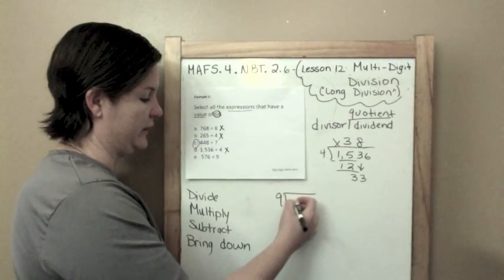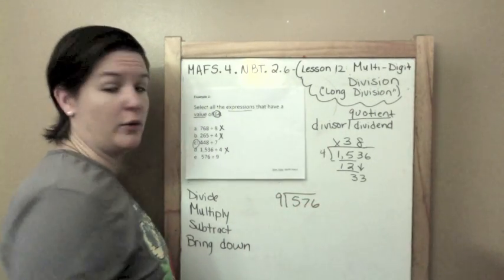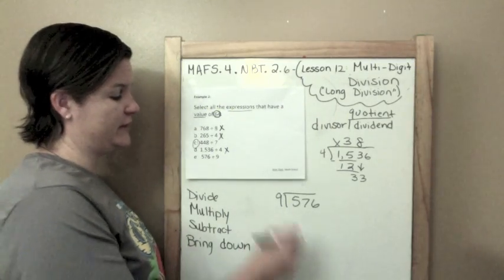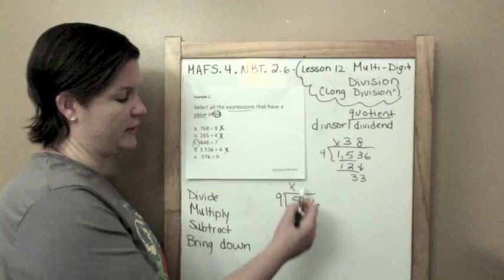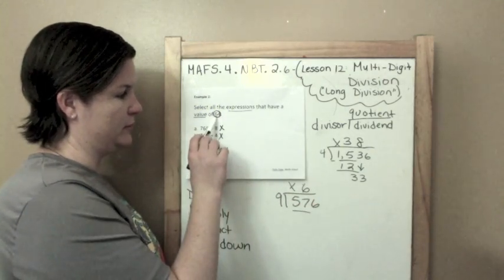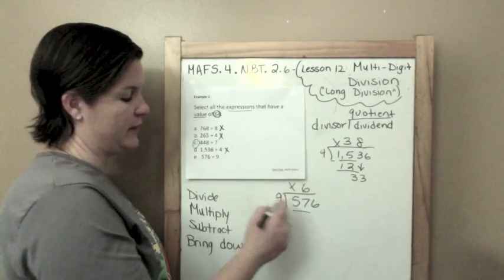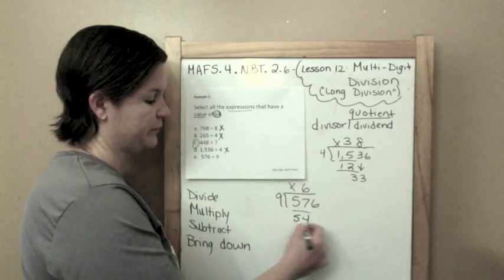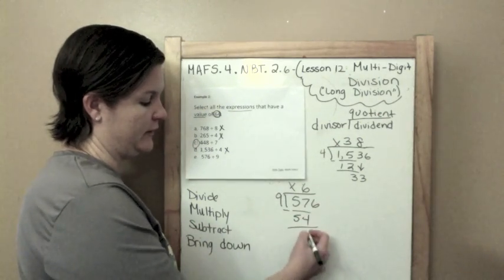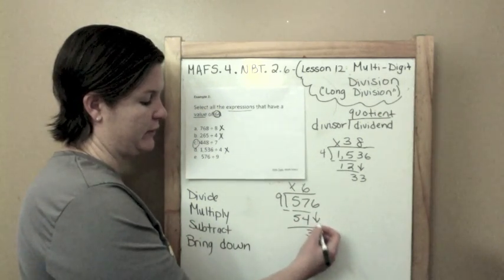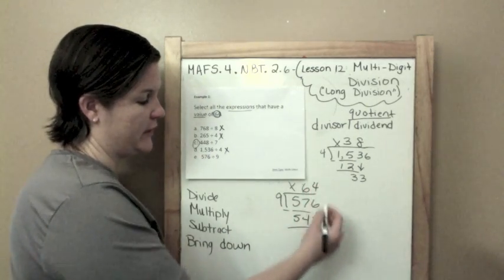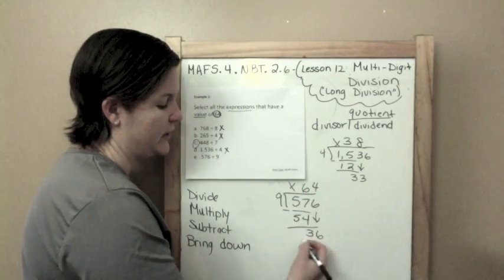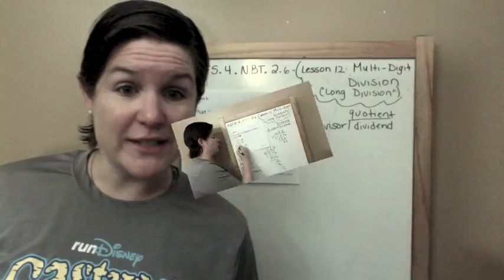All right, 9 going into 576. How many times does 9 go into 5? It can't. How many times does 9 go into 57? 6 times. 6 times 9 is 54. Subtract, that would be 3. Bring down, that would be 6. 9 goes into 36 four times. 4 times 9 is 36. Subtraction: 0. Boom!